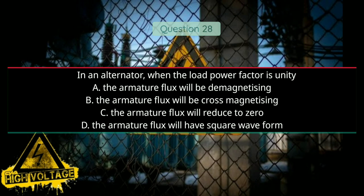Question twenty-eight: In an alternator, when the load power factor is unity — Option A: the armature flux will be demagnetizing, Option B: the armature flux will be cross-magnetizing, Option C: the armature flux will be reduced to zero, and Option D: the armature flux will have a square waveform. Answer will be B, the armature flux will be cross-magnetizing.